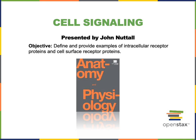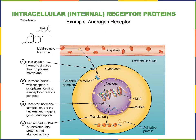In this video I will define and provide examples of intracellular receptor proteins and cell surface receptor proteins. During intercellular signaling, a chemical message — the intercellular signal such as a hormone — is released by the signaling cell and binds to a receptor protein that's either located on the surface of a target cell or within the target cell. If the receptor protein is found within the target cell, that's an intracellular receptor protein.